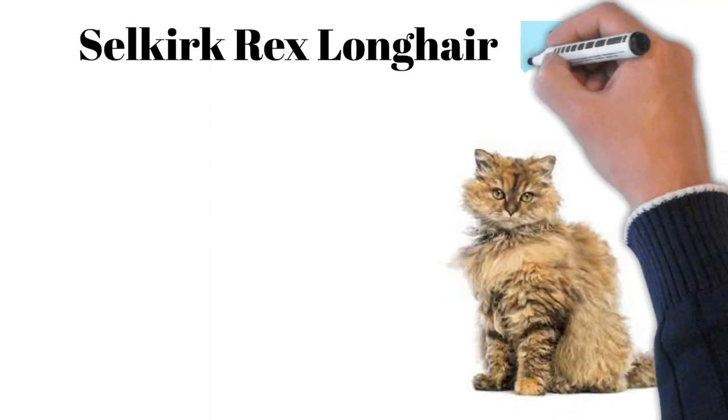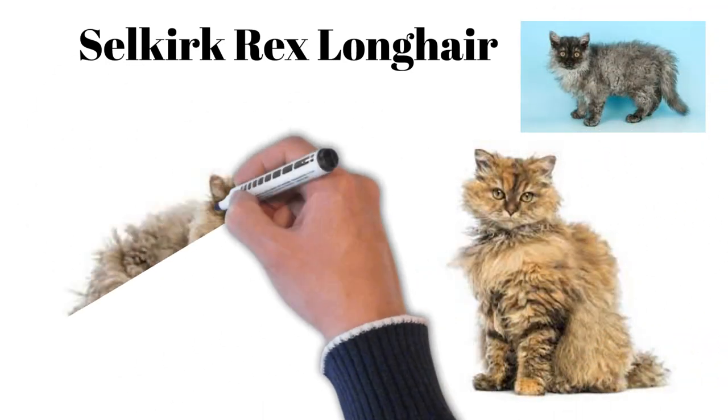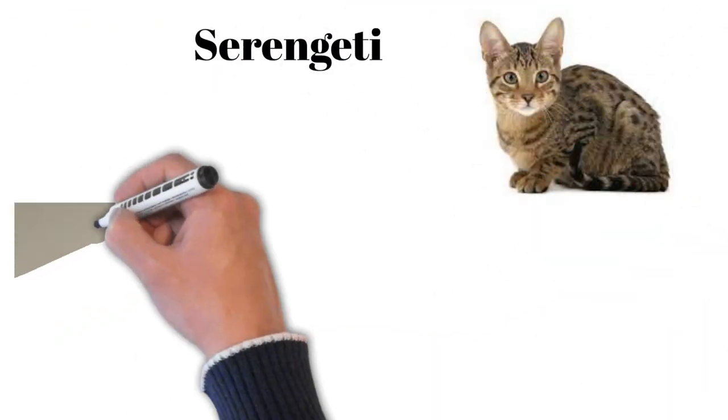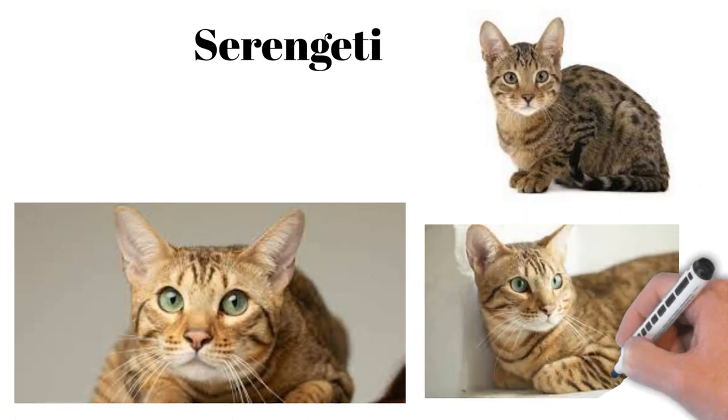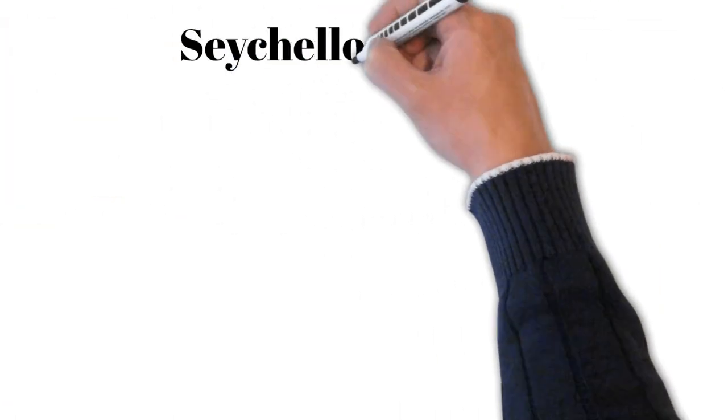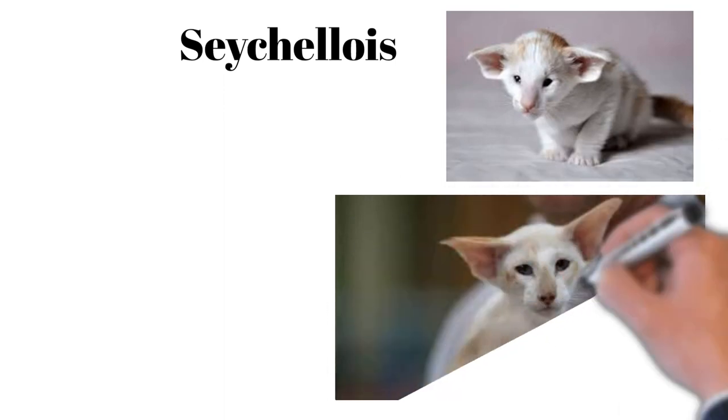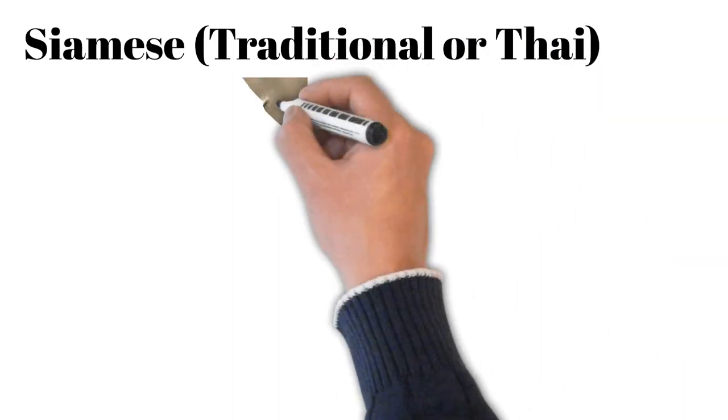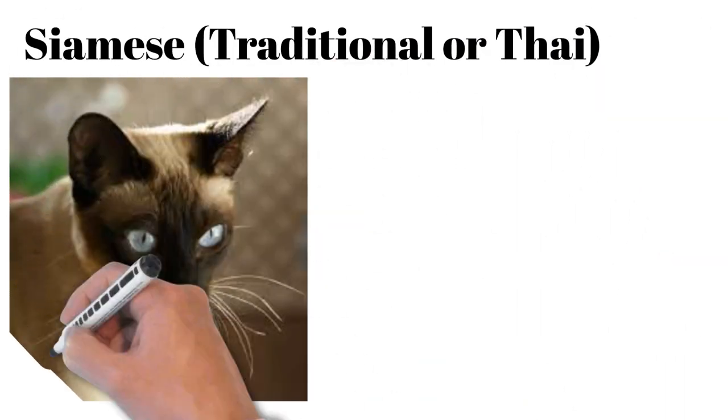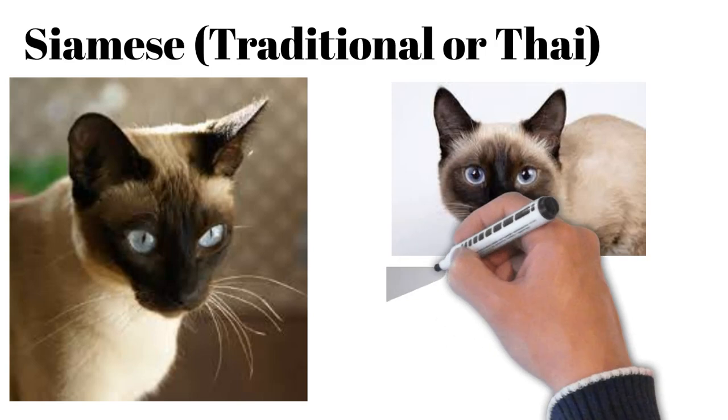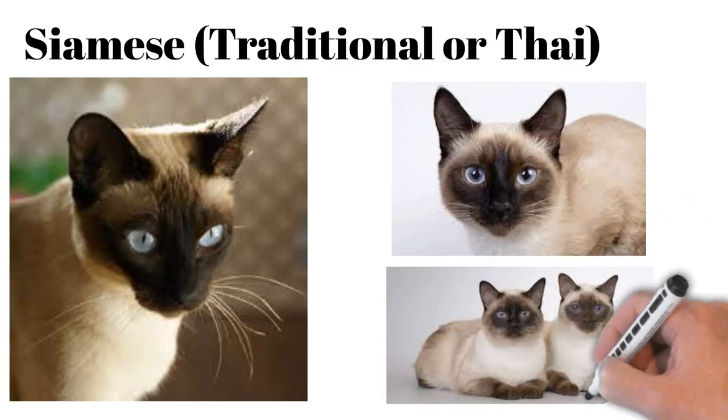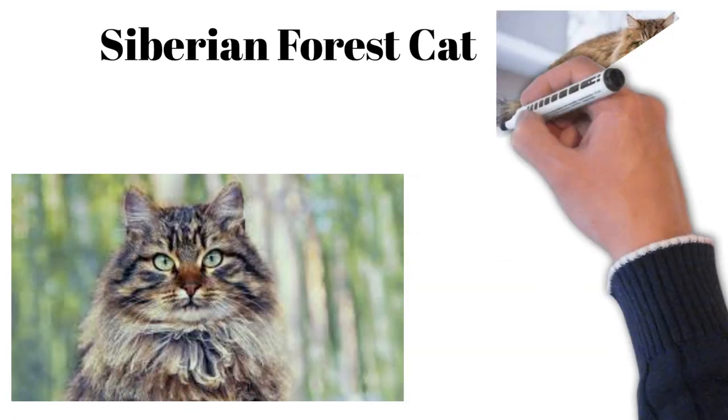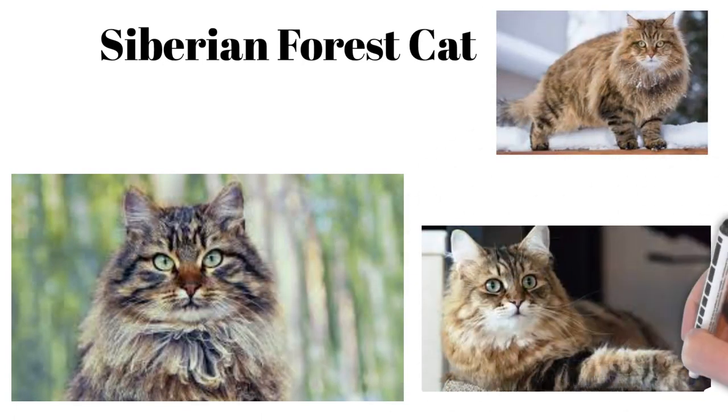Selkirk Rex Longhair: plush curls, round face, patient, loving, and tolerant. Serengeti: spotted, developed from Bengal and Oriental, lively, vocal. Seychellois: variant of Siamese with specific color points, friendly, vocal. Siamese, Traditional or Thai: elegant, sociable, vocal, craves interaction and companionship. Siberian Forest Cat: robust health, affectionate, great jumper, hypoallergenic fur.